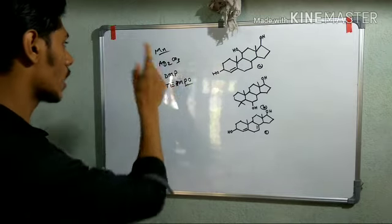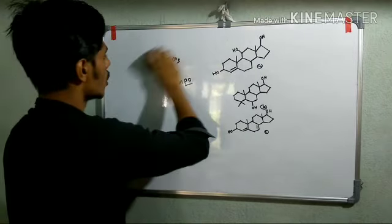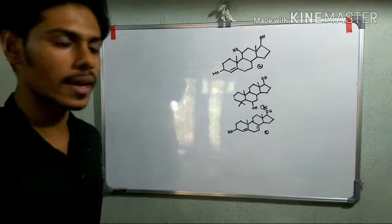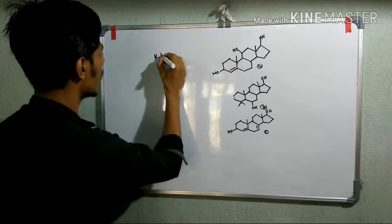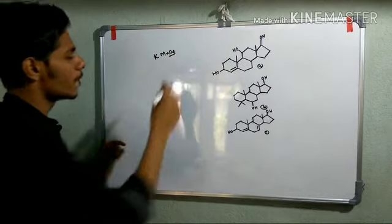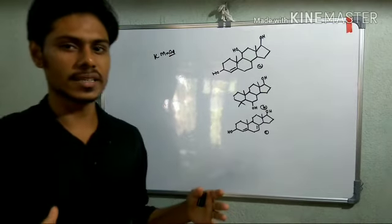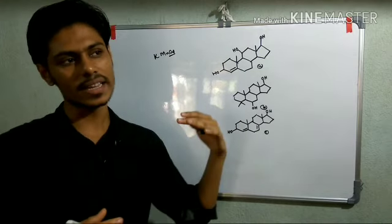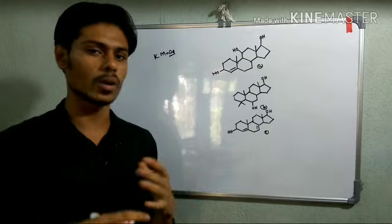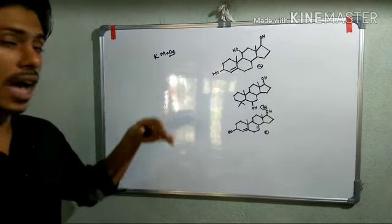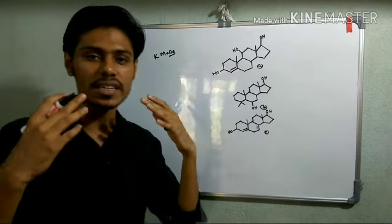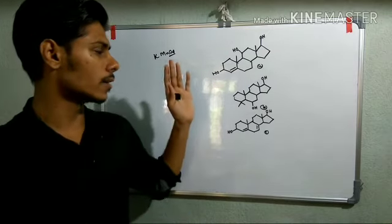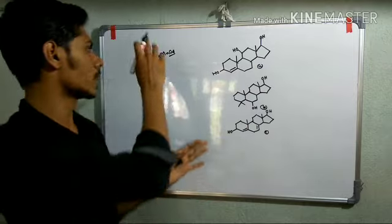Let's start with the manganese reagents. Considering the oxidizing agents of manganese, potassium permanganate, KMnO4, is a very strong oxidizing agent, but its very high reactivity is the reason it is not generally used for organic reactions. Due to its high reactivity, it is very much less selective, and due to this low selectivity, there is very little use of this particular reagent.